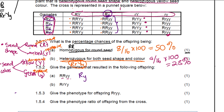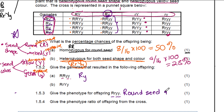Give the phenotype for offspring capital letter R, small letter R, small letter Y, small letter Y. Capital letter R, small letter R — that's for round, so this would be a heterozygous round seed shape. And for the color: small letter Y, small letter Y — that is green color. So you can say round and green seeds — they are round in shape and they are green in color.